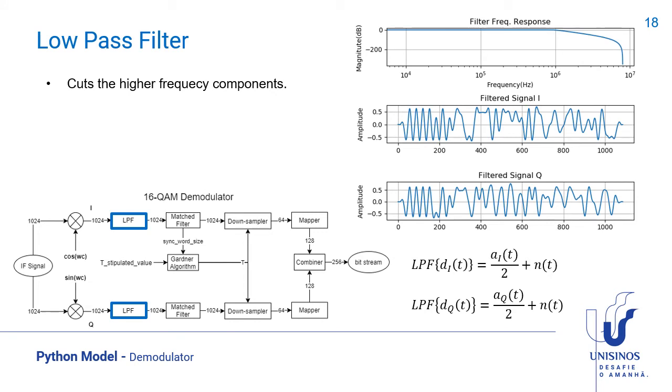To obtain the signals in baseband, a low-pass filter with cutoff frequency of 1 megahertz is implemented. In the figure is the in-phase signal and the quadrature signal in the time domain, and the filter frequency response in the frequency domain.